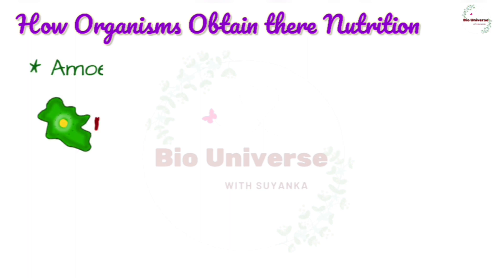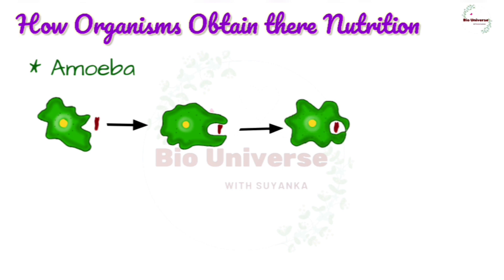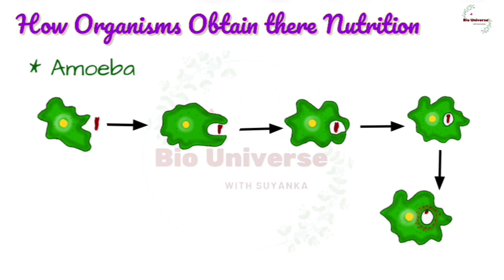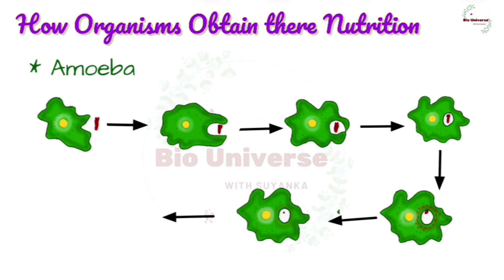Amoeba takes in complex organic matter as food. Amoeba first identifies its food and then throws out a number of small pseudopodia. These pseudopodia enclose the food particle and prevent it from escaping. The food enclosed in the cell membrane forms a food vacuole. The complex food is broken down into simpler molecules with the help of digestive enzymes.